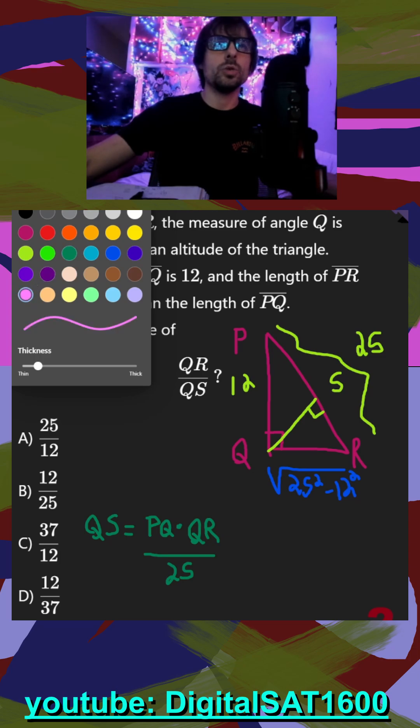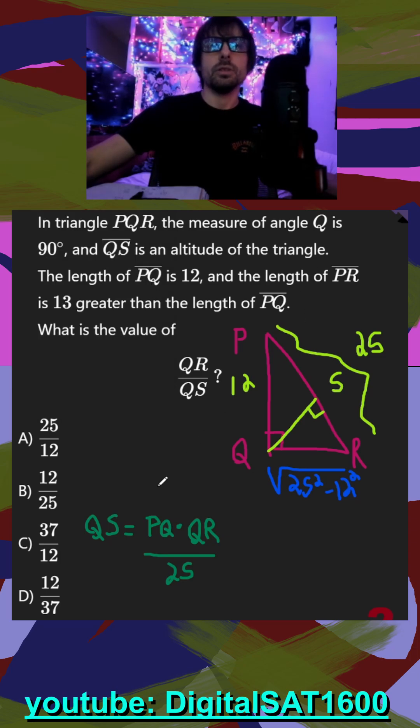So what's nice is we can do a little bit of shortcuts here. So if they want QR over QS, let's do a little bit of math. We could cross multiply here, and we could get 25 QS is equal to PQ times QR.